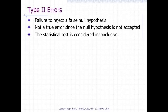The second type of error that can be made in significance testing is failing to reject a false null hypothesis. This kind of error is called a type 2 error. Unlike a type 1 error, a type 2 error is not really an error.